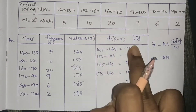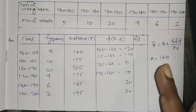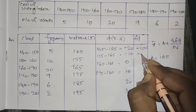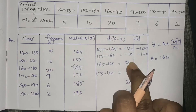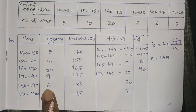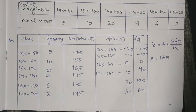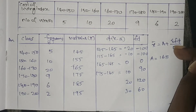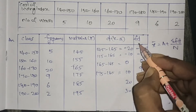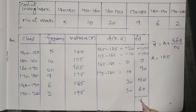Next we calculate fd — frequency multiplied by d. So: 5 times minus 20 equals minus 100; 10 times minus 10 equals minus 100; 20 times 0 equals 0; 9 times 10 equals 90; 6 times 20 equals 120; 2 times 30 equals 60. Sigma fd totals 70.